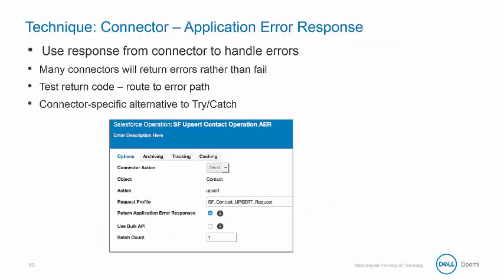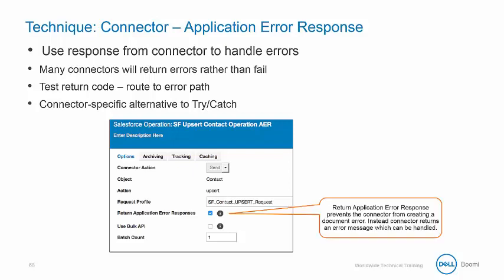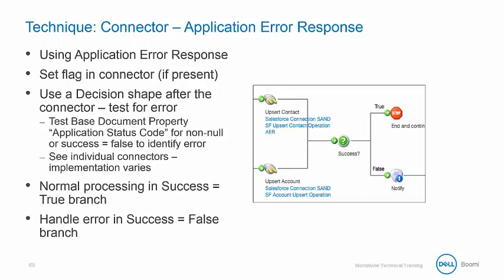Another error handling technique involves connectors. Some connectors can send responses back into the process, allowing us to handle exceptions gracefully. The connectors will return errors instead of fail, which is an alternative to the try-catch shape. Click Return Application Error Responses to get the response from the connector. In this example, we're using the Application Error Response from the Salesforce connector and a Decision shape to route to either a Stop shape or a Notify shape.